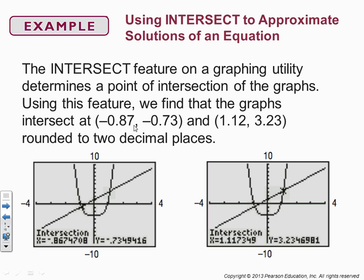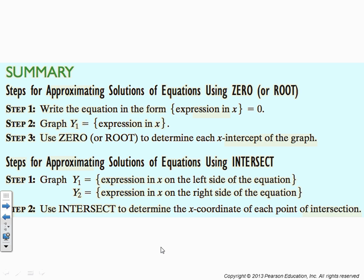So it's in fact the x value that we care about. So when we write this on our paper, we write the solutions are x equals negative 0.87 and x equals 1.12. The y values, yay, that's interesting. But we're asking for the solution to the equation and that is specific to the x's.